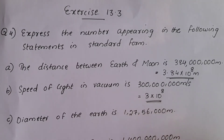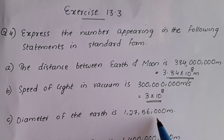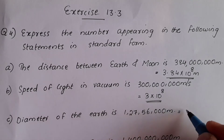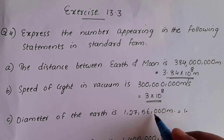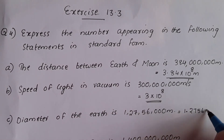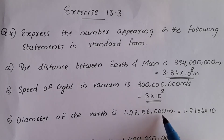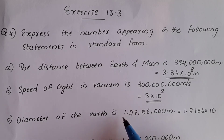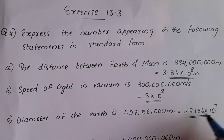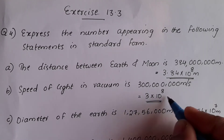Next question is the diameter of the Earth. Using the standard formula, it is 1.2756 into 10 raise to 7. The total number of digits is 8, and 8 minus 1 is 7. So the answer is 1.2756 into 10 raise to 7 meters.